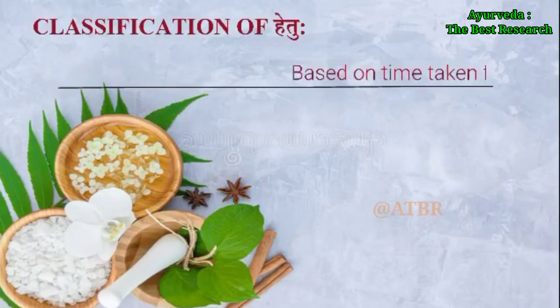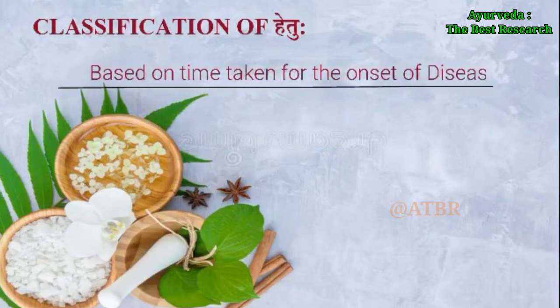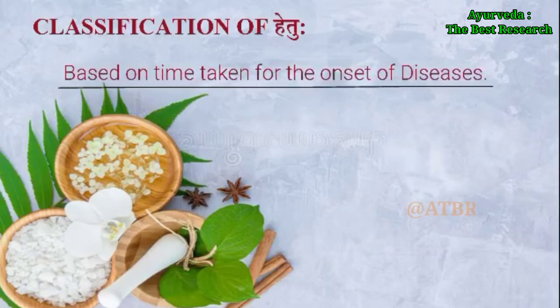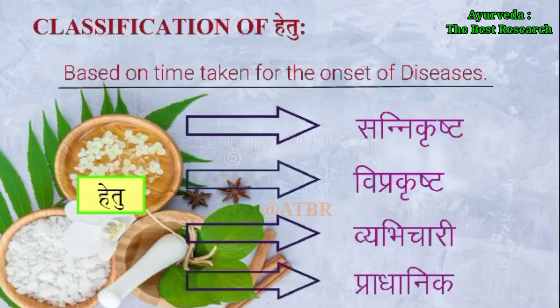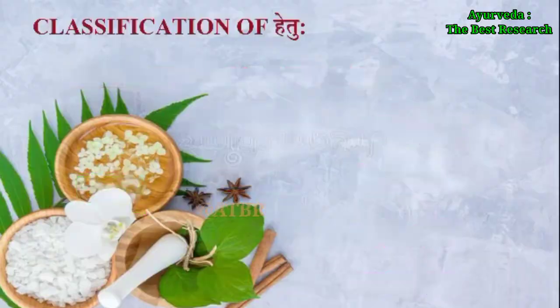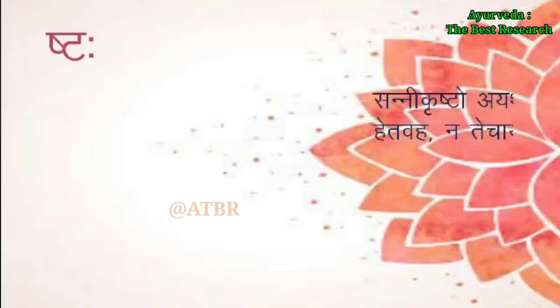Classification of hetu based on the time taken for the onset of the disease: the first is sannikrushta, the second is viprakrushta, the third is vipachari, and the fourth is pradhanika.